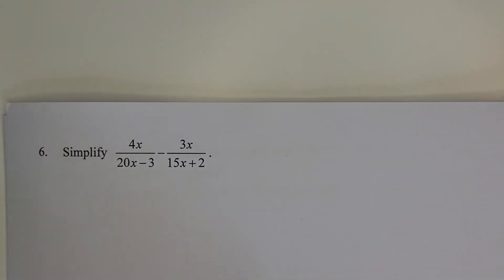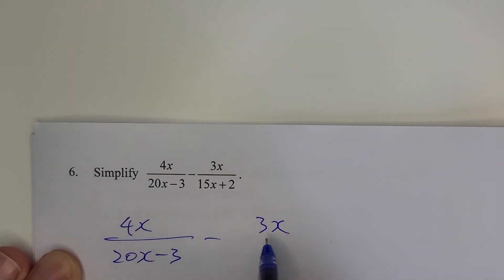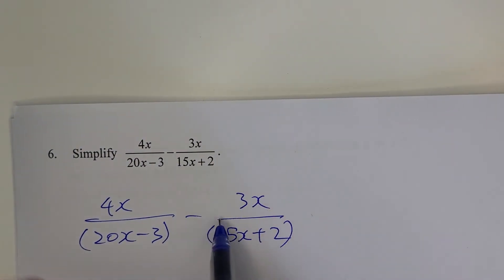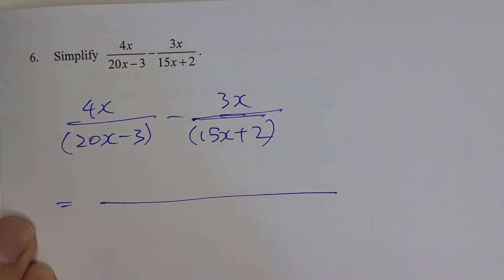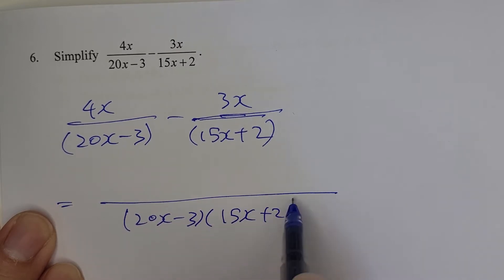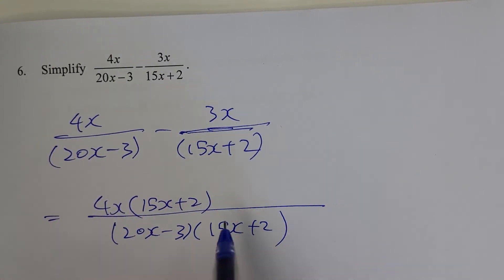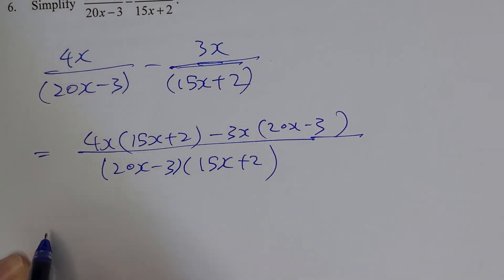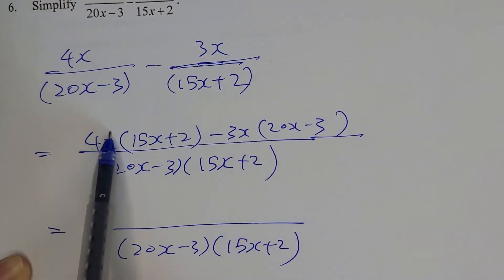Question number six: simplify the algebraic fraction. Write down the fraction first. Whenever you are doing addition, subtraction, multiplication, or division of fractions with more than one term in the numerator or denominator, add brackets around those terms. Then find the LCM — in this case just multiply the two factors together. In the numerator, 4x multiplies (15x plus 2) and negative 3x multiplies (20x minus 3), with brackets.